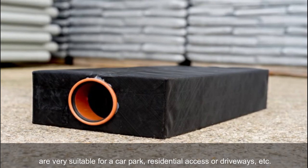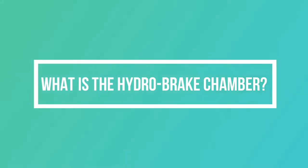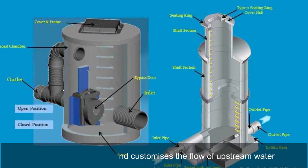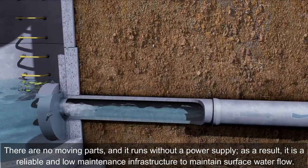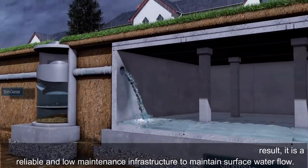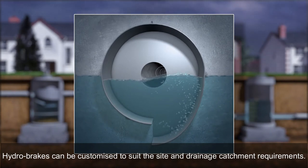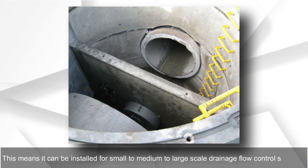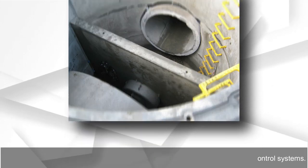These diffusers are made of high strength material to withstand heavy vehicular load and are very suitable for a car park, residential access, or driveways. What is the hydro brake chamber? Hydro brake controls and customizes the flow of upstream water. There are no moving parts and it runs without a power supply; as a result, it is a reliable and low maintenance infrastructure to maintain surface water flow. Hydro brakes can be customized to suit the site and drainage catchment requirements, meaning it can be installed for small to medium to large scale drainage flow control systems.